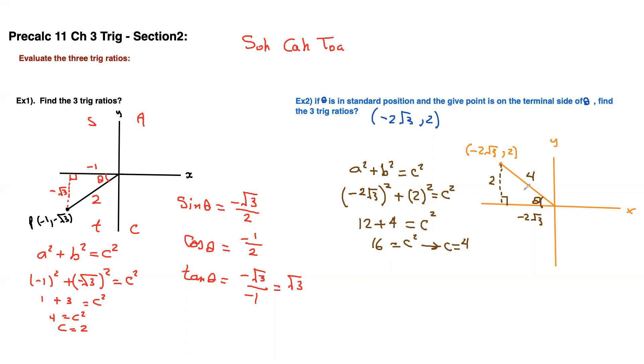After you found all of these, you can just go and list all your trig ratios: sine theta, cos theta, tan theta. Sine is opposite over hypotenuse, so 2 over 4, which reduces to 1 half. Cosine theta will be adjacent over hypotenuse, so negative 2 root 3 over 4, which reduces to negative root 3 over 2.